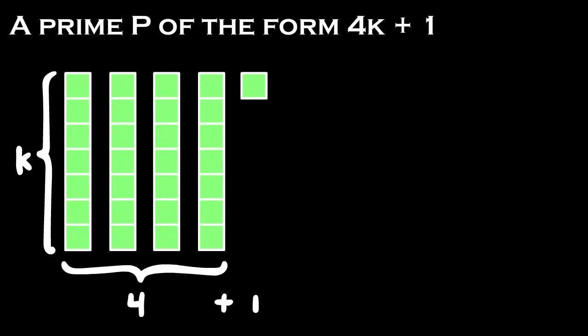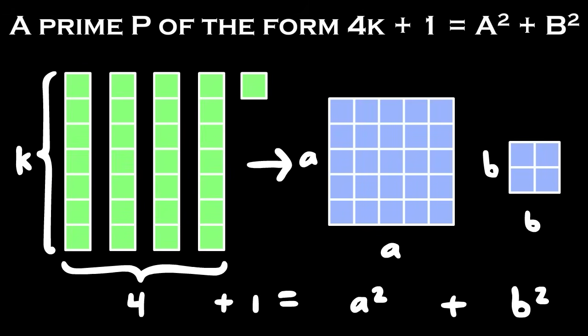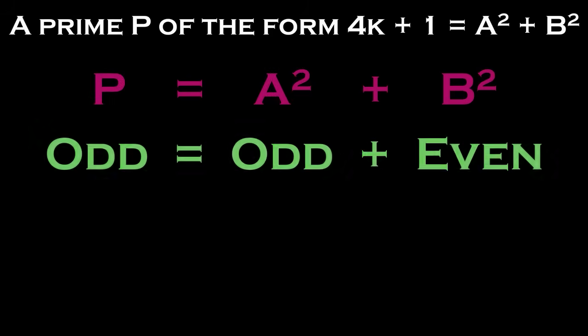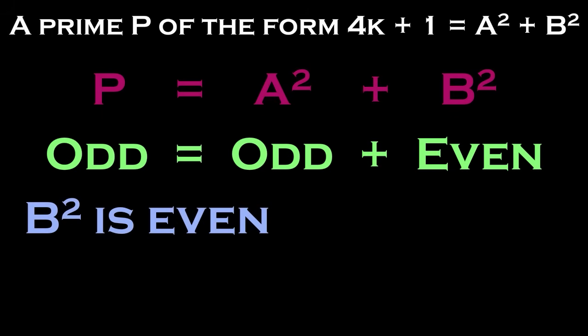Remember that what we're trying to prove is that a prime of the form 4k plus 1 can be written as the sum of two squares. Note that because p is odd, then one of a squared or b squared must be even, and the other must be odd. We'll assume without loss of generality that the even one is b squared.